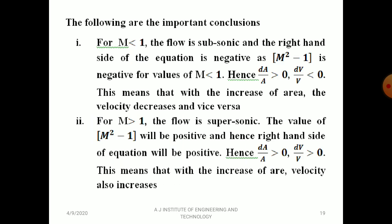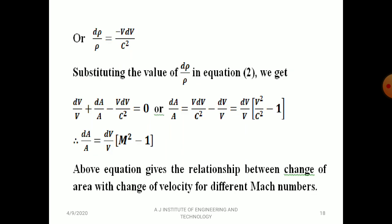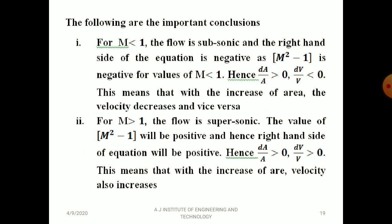Conclusions from dA/A = (dV/V)·(M² − 1): For M < 1 (subsonic flow), the right-hand side is negative (e.g., 0.5² − 1 < 0), so dA/A and dV/V have opposite signs — when area increases, velocity decreases and vice versa. For M > 1 (supersonic flow), M² − 1 is positive (e.g., 1.5² − 1 > 0), so dA/A and dV/V have the same sign — when velocity increases, area also increases.